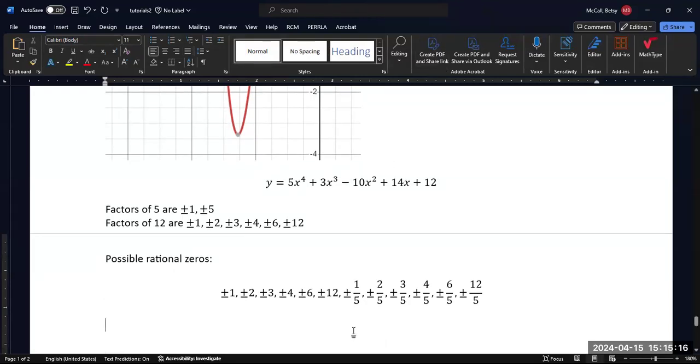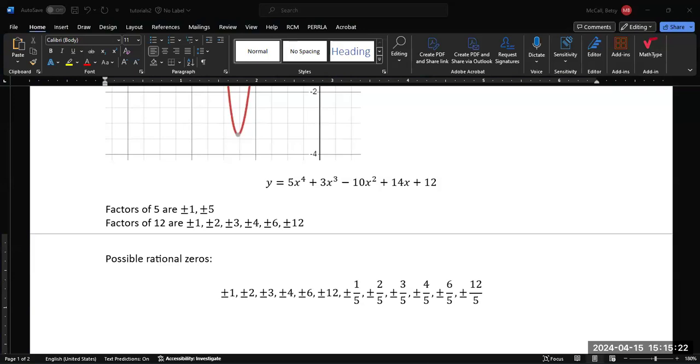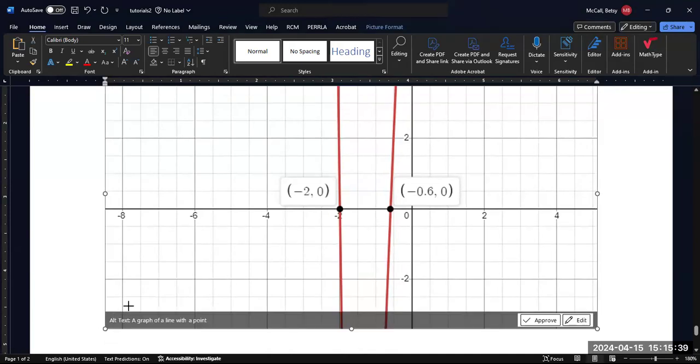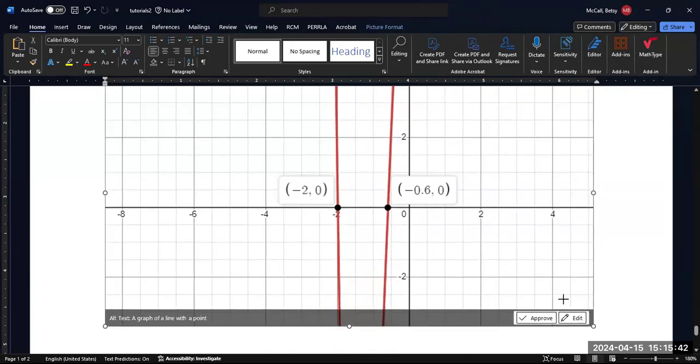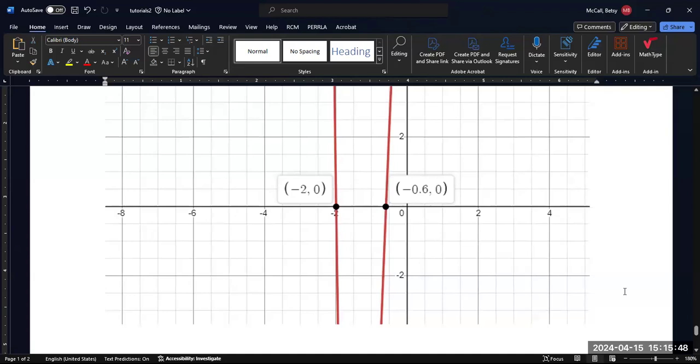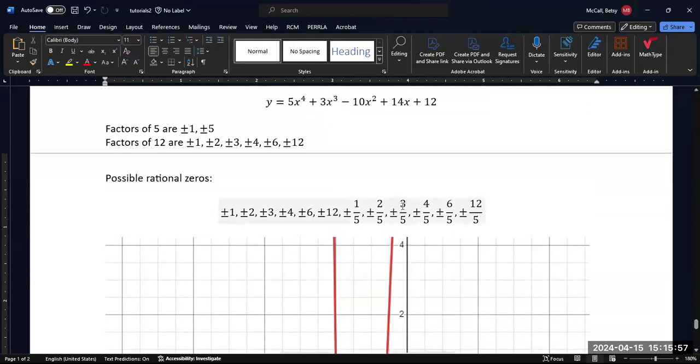Now we can graph this and we can look at what the actual zeros are. And it turns out that the rational zeros for this expression are negative 2 and negative 0.6. Well, negative 0.6 as a fraction, that's negative 3 over 5.